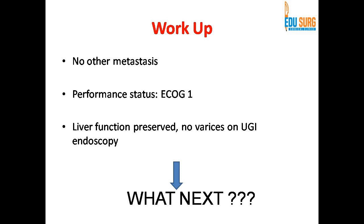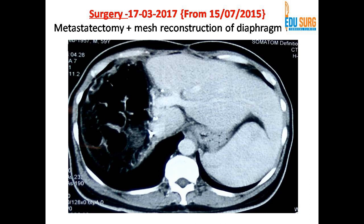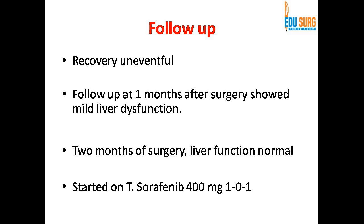At this stage, the question was whether to start the patient directly on sorafenib or to operate. We knew that removing this recurrence would not require removing a large volume of liver, and since this patient had recovered for more than one and a half years after the first presentation of a ruptured HCC, considering the good biological behavior of the tumor, we proceeded with surgery — a metastatectomy with mesh reconstruction of the diaphragm — and then started the patient on sorafenib 400 mg twice a day. After a month of surgery there was mild liver dysfunction which resolved at two months, after which we started sorafenib.